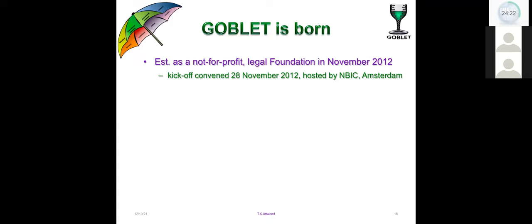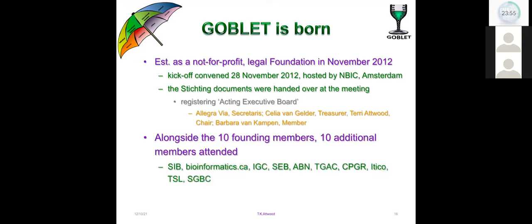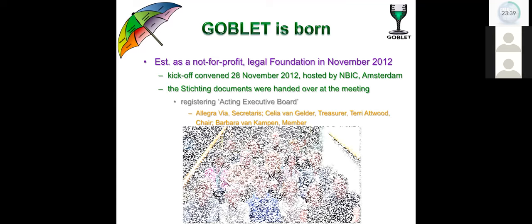So a kick-off meeting was convened in Amsterdam on the 28th of November in 2012, hosted by NBIC. And the formal sticking documents were handed over during that meeting, registering an acting executive board comprising Allegra Veer as secretary, Celia Vangelda as treasurer, myself in the chair, and Barbara van Kampen as a member. Alongside the founders, 10 other organisations had agreed to become members and some of their representatives attended the meeting. CSC also attended as observers. So those were all the members at that time and these were the meeting participants.